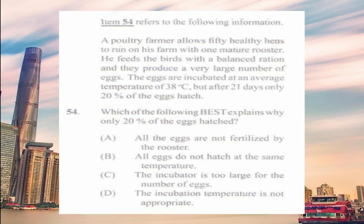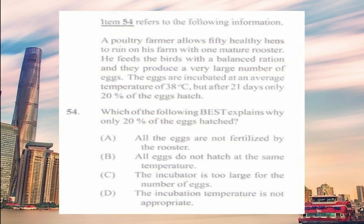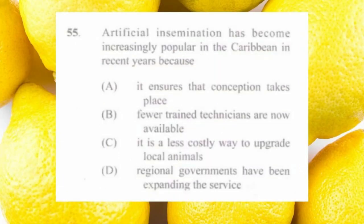Question number fifty-four: a poultry farmer allows 50 healthy hens to run with one mature rooster, feeds them a balanced ration, and they produce a large number of eggs. The eggs are incubated at 38°C but after 21 days only 20% hatch. The best explanation is a) all the eggs are not fertilized by the rooster. One rooster cannot mate with so many hens — approximately one rooster is needed for every 12 hens.